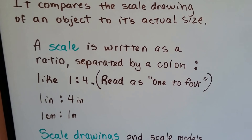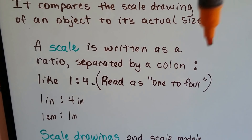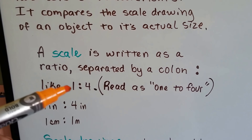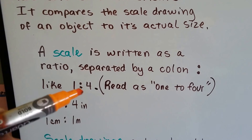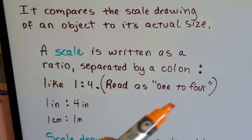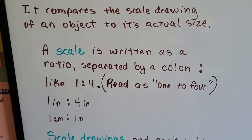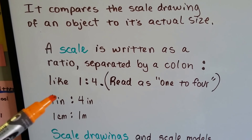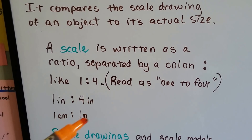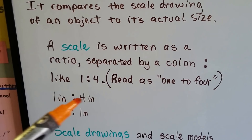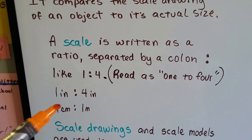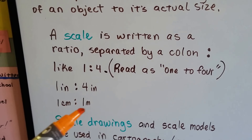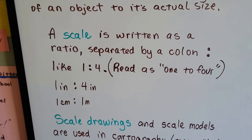A scale is written as a ratio, separated by a colon — like one colon four, which is read as 'one to four.' For example, one inch to four inches means one inch represents four inches in the drawing. Or one centimeter to one meter, meaning one centimeter could represent one meter in the drawing.